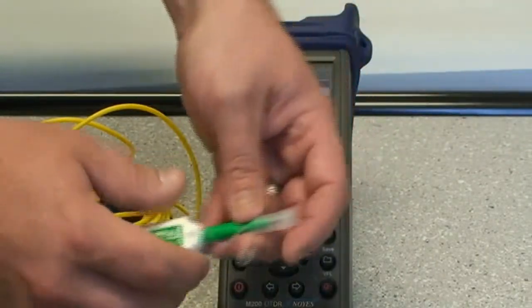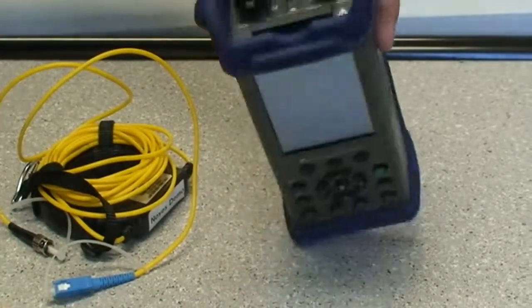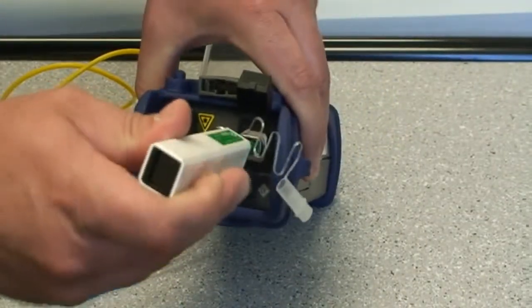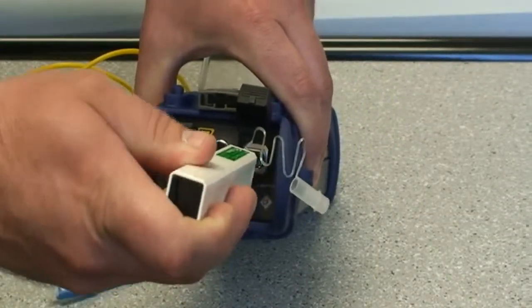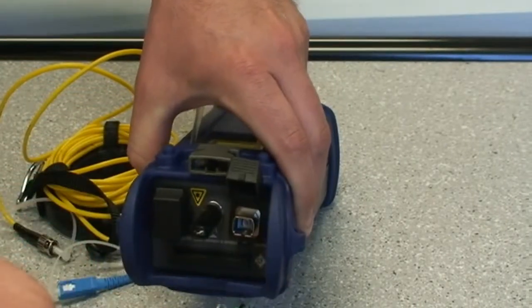By removing the adapter on the unit, you can clean through the adapter on the test equipment to the connector on the inside of the unit just by simply pressing until you hear the click.